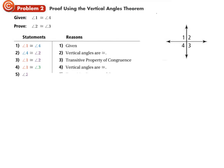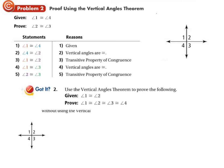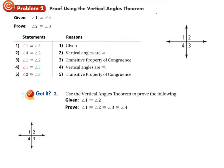Here's a got-it problem: use the Vertical Angles Theorem to prove that all four angles in the diagram are congruent to each other, given that angle one is congruent to angle two. Write down the rules and see if you get it. Even if you don't get it at first, read through the answer step by step and make sure each step makes sense to you.